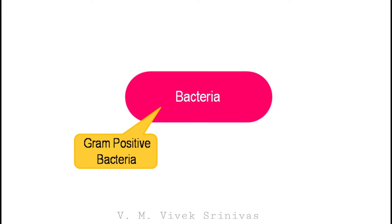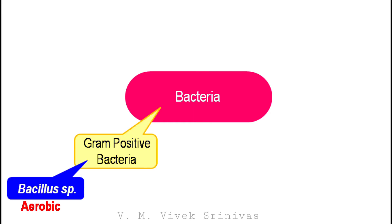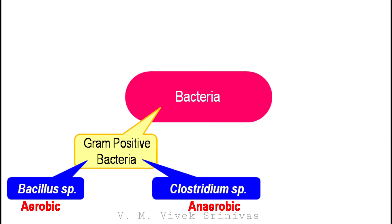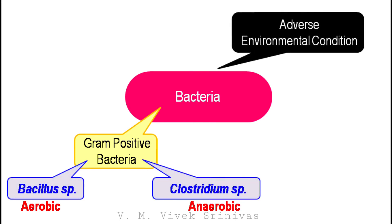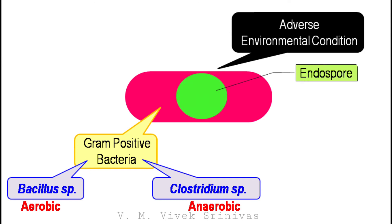Some gram-positive bacteria, like the Bacillus, which is aerobic bacteria, and the Clostridium, which is anaerobic bacteria. During adverse environmental conditions, or during nutrition depletion, these bacteria will produce the endospore — that is, the spore within the bacterial cell.